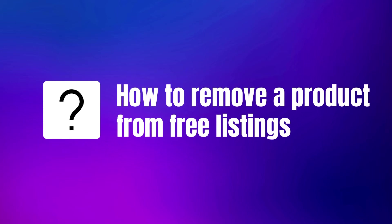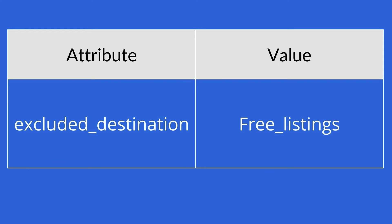To remove a product, add to the product feed info for this product the attribute excluded destination with value free listings. It can be done in several ways. I usually do it with a supplementary feed. If you want to learn more, then check out my tutorial.